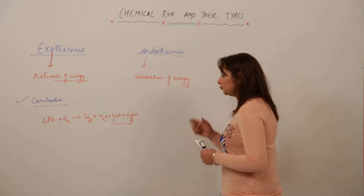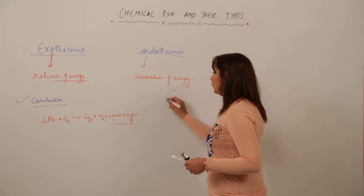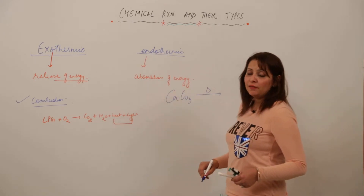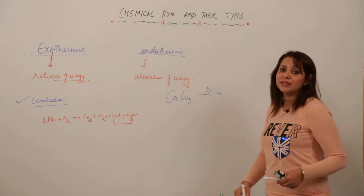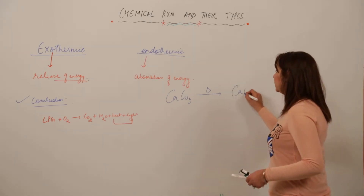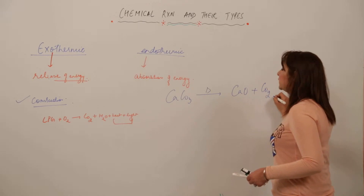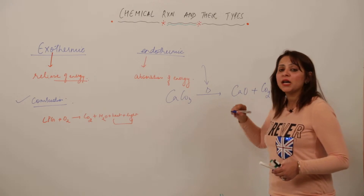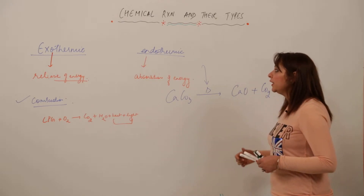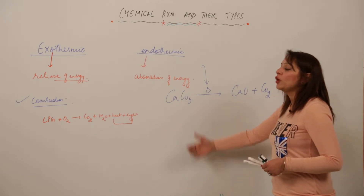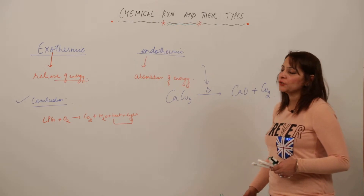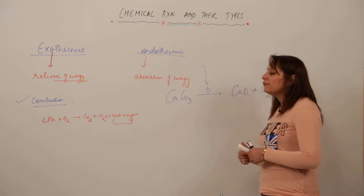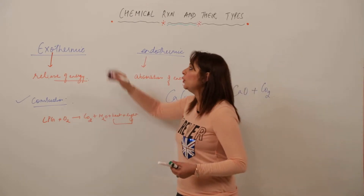For an endothermic example, we can decompose CaCO₃ by supplying heat. When we supply heat to limestone (calcium carbonate), it decomposes into its constituents CaO and CO₂. This reaction needed energy — it occurred due to absorption of energy — so it falls in the category of endothermic reaction.